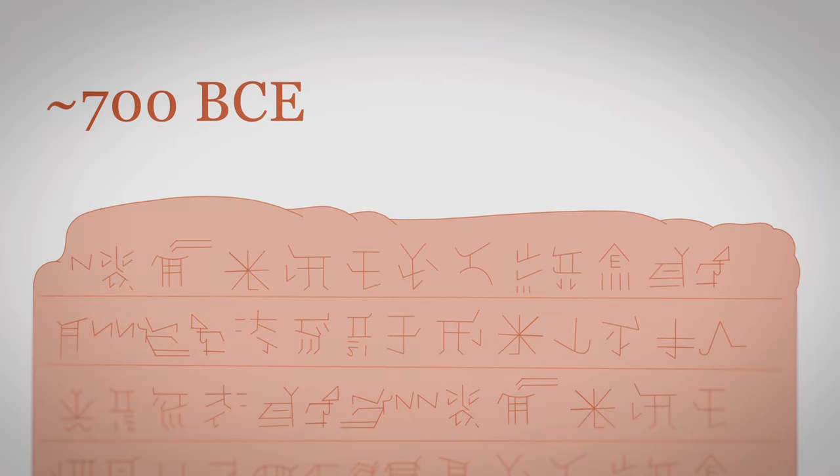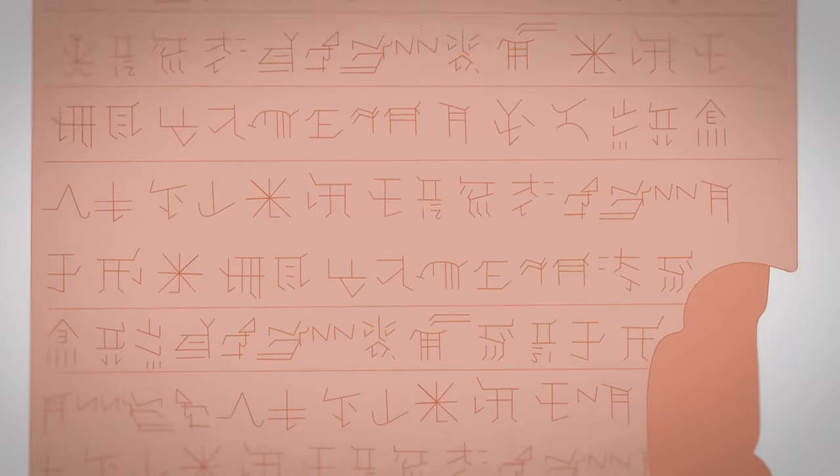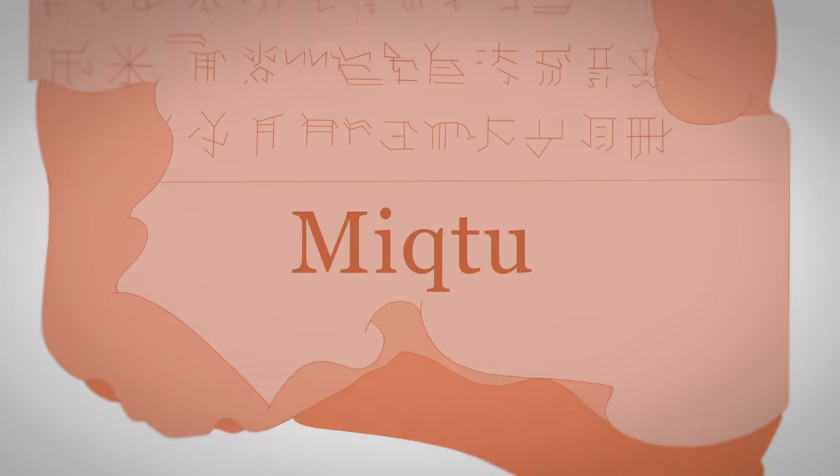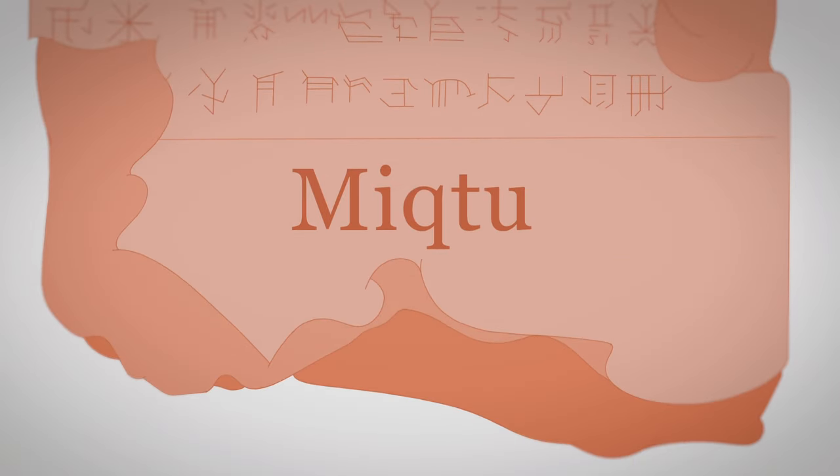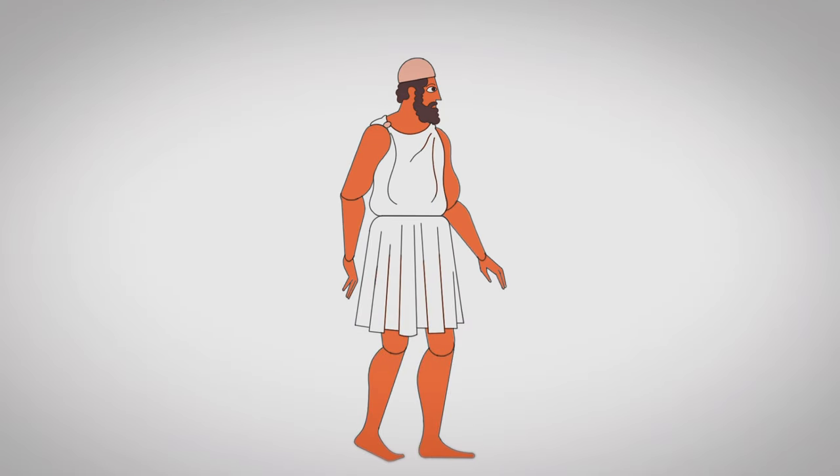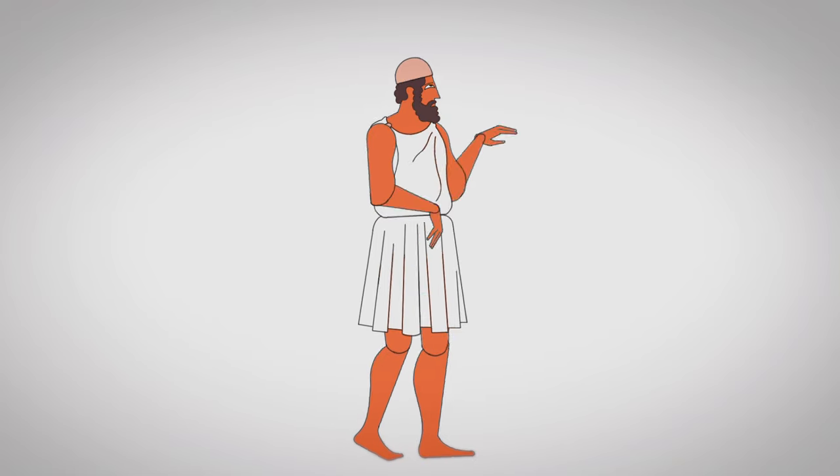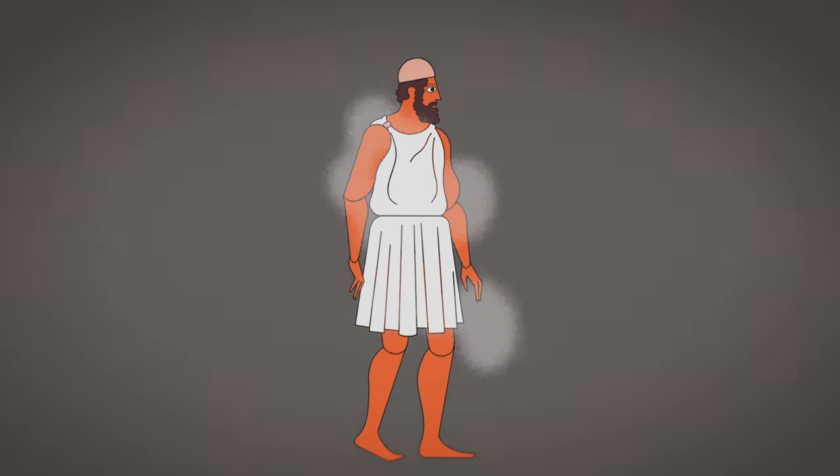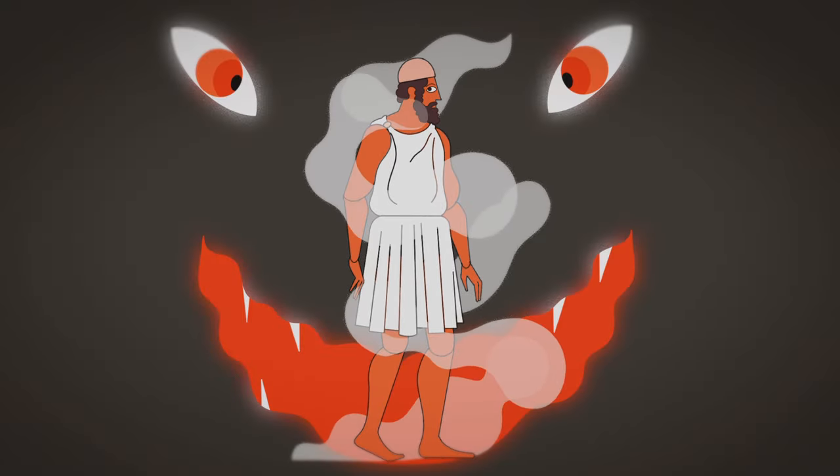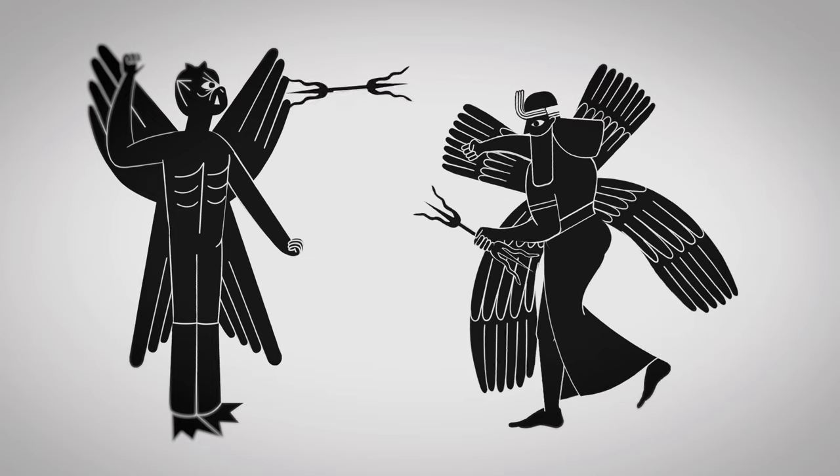Nearly three millennia ago, a Babylonian tablet described a curious illness called miktu. Said to cause symptoms ranging from facial twitching to full-body convulsions, the Babylonians believed those afflicted were possessed by evil spirits, and the only treatment was divine intervention.